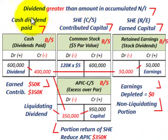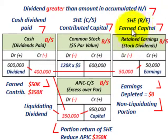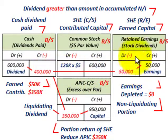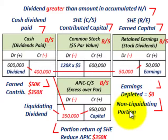Now let's look at a case where the dividend is greater than the amount in accumulated net income. Same situation as before — common stockholders receive a $400,000 cash dividend — but in this case, we only have $50,000 in retained earnings. We pay all of that out to meet the $400,000 dividend. The retained earnings are depleted down to zero, and that $50,000 portion is again the non-liquidating portion.